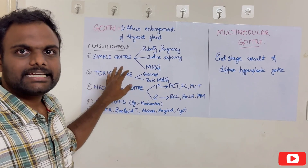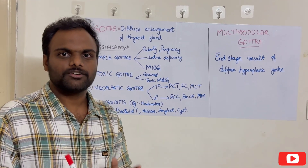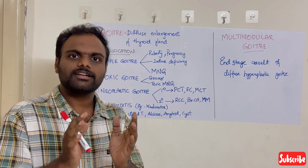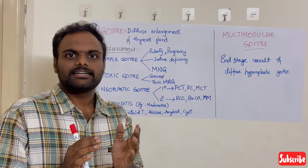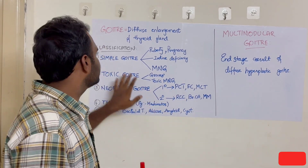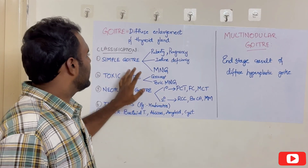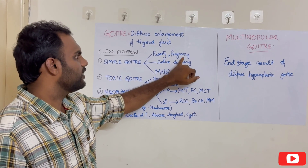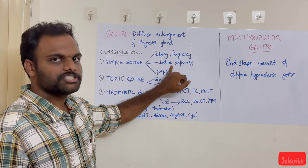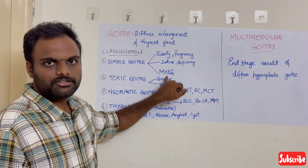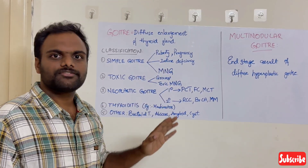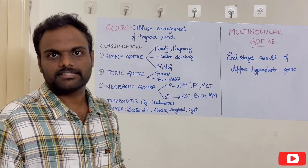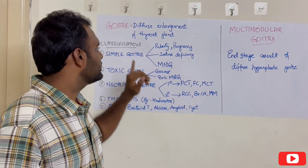We know that goiter means diffuse enlargement of thyroid gland. When the enlargement of thyroid gland does not cause any increased hormone production, then it is just simple goiter. In simple goiter, we have puberty goiter, pregnancy goiter, iodine deficiency goiter, and multinodular goiter. In all these types of goiters, thyroid hormone production is not at all increased. That's why we place them in simple goiter.